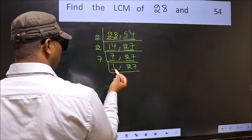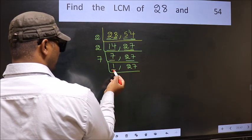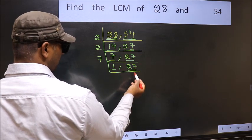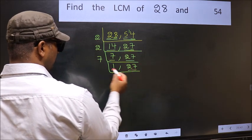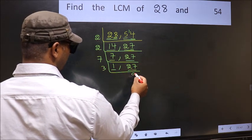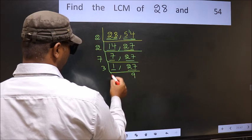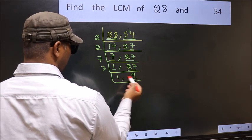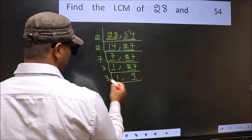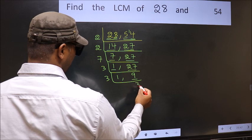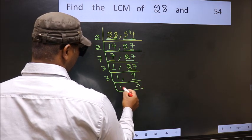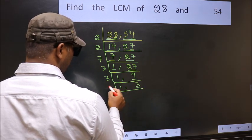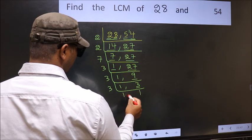Now we got 1 here, so focus on the other number 27. 3 times 9 is 27. Now we have 9 — 3 times 3 is 9. Now we have 3. 3 is a prime number, so 3 times 1 is 3.